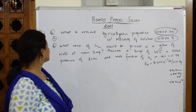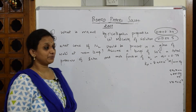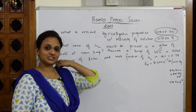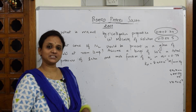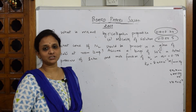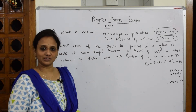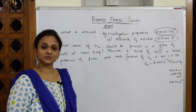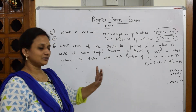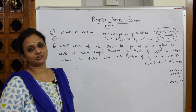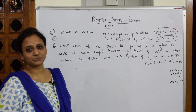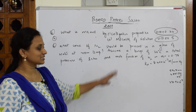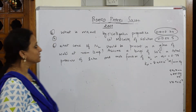In your 2009 paper, this is the only numerical which is completely different from all of the numericals of all the years. Here they have given you a Henry's constant numerical. Earlier we have been doing van't Hoff factor, osmotic pressure, molecular weight, but here this is a bit different. Let's see the numerical.